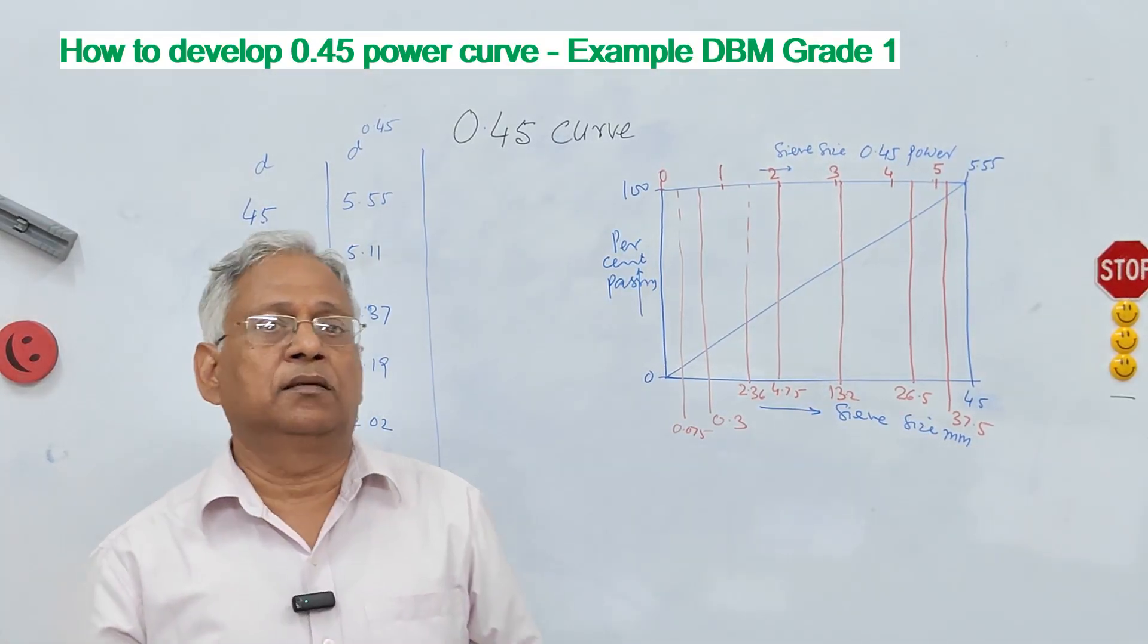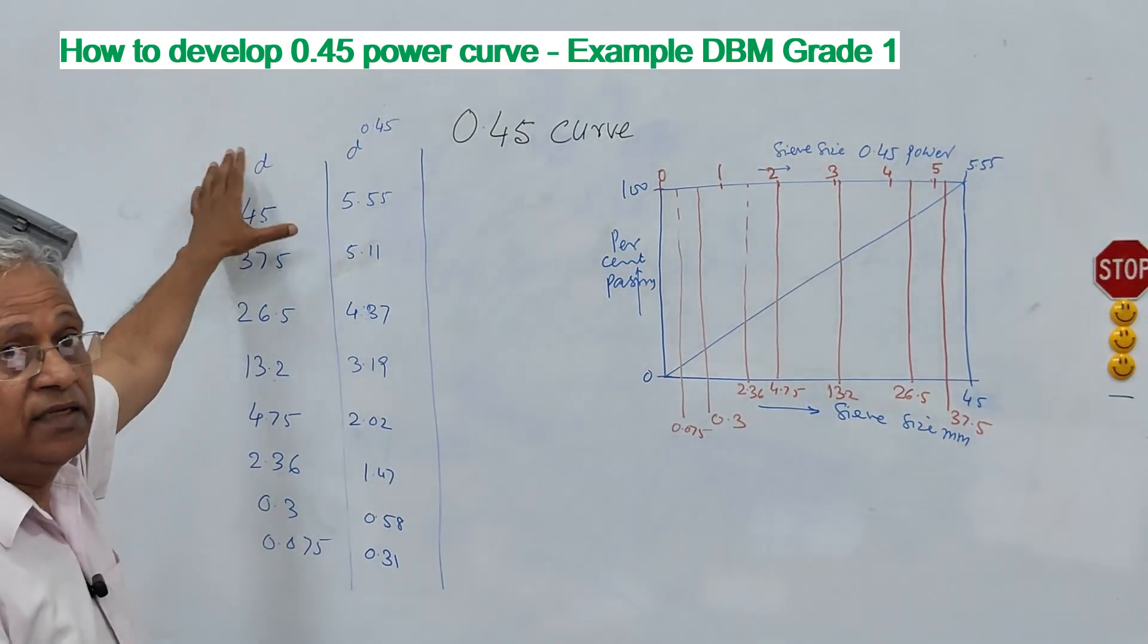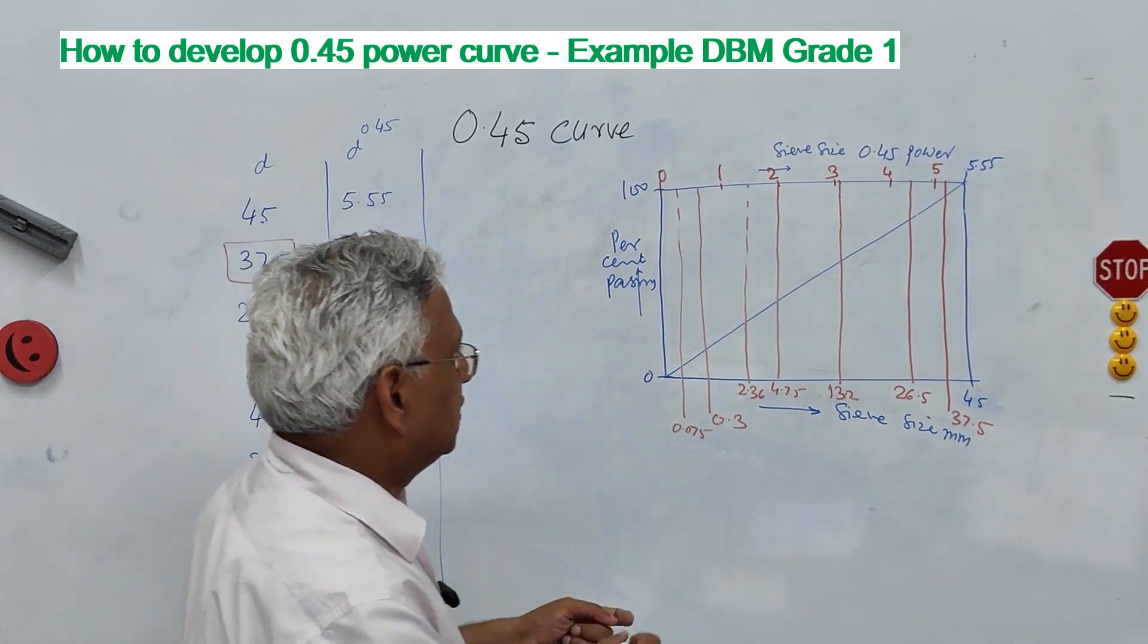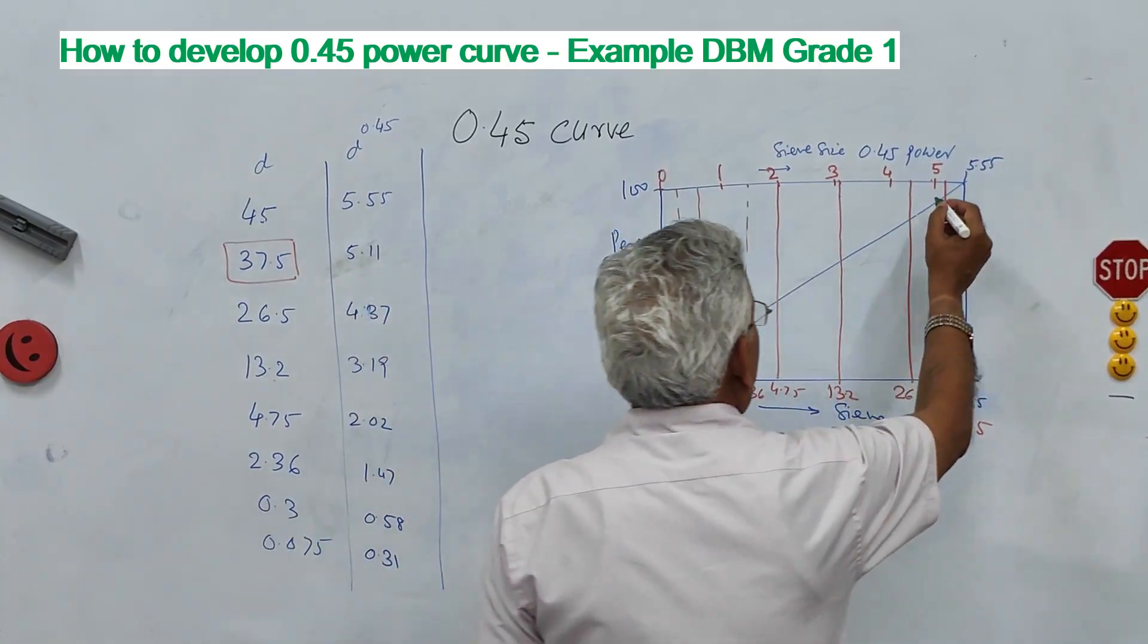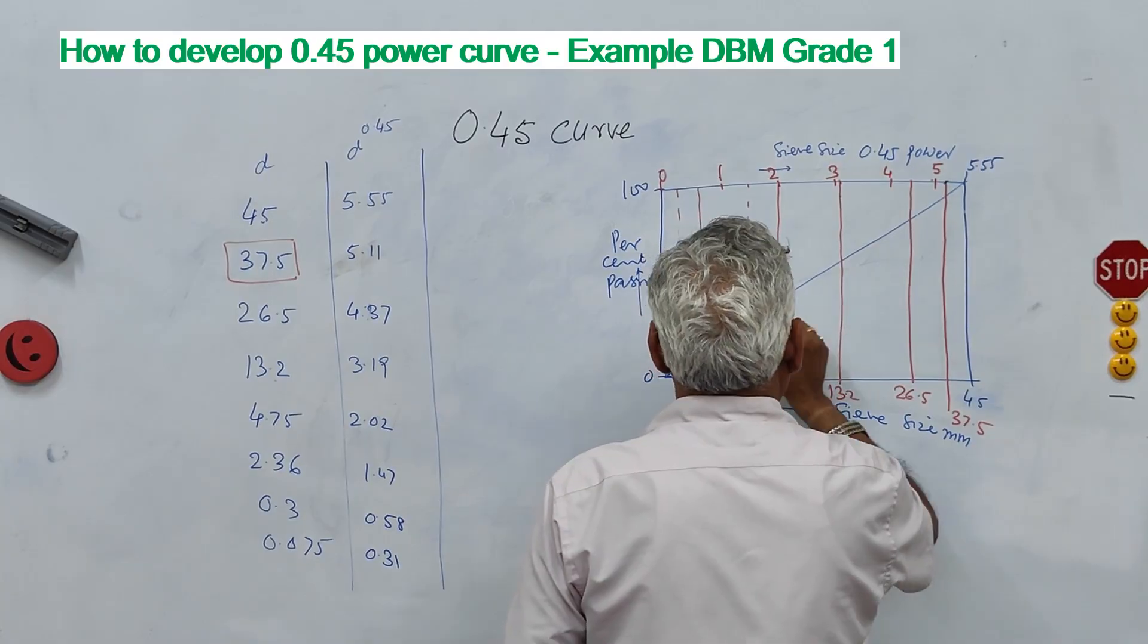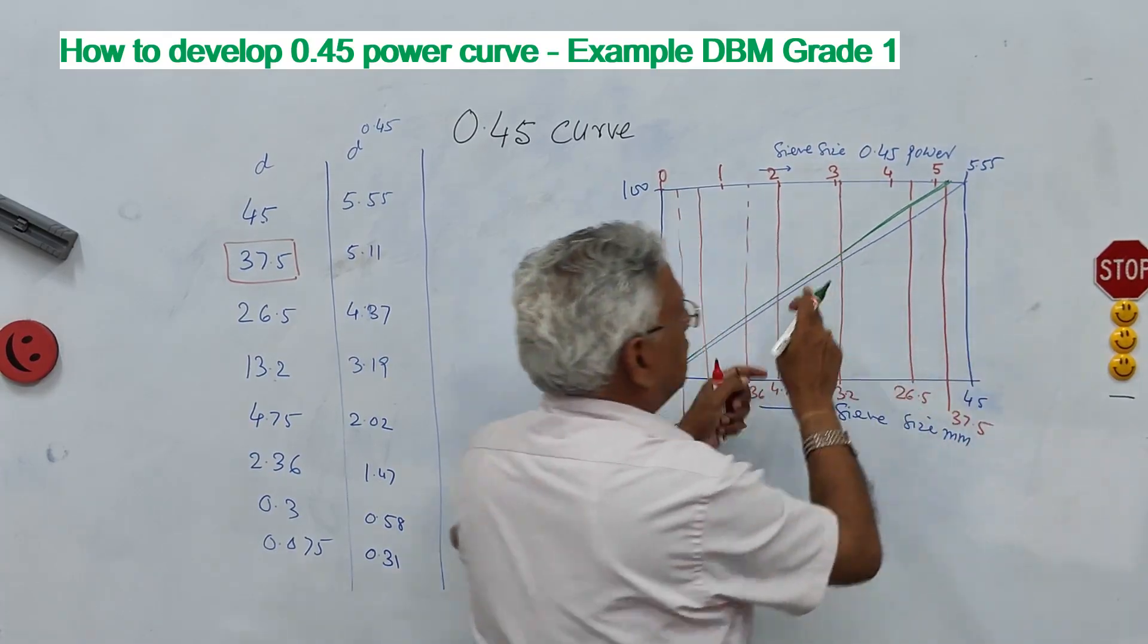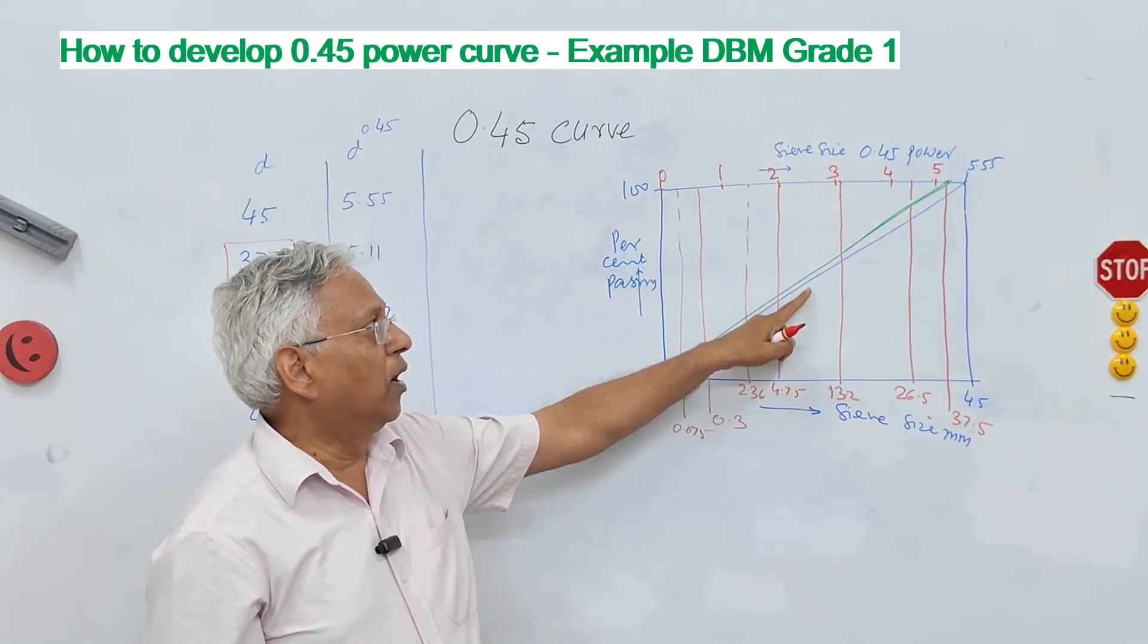Now suppose you take another mix let us say other than DBM1, you take DBM2. Now DBM2 starts from here 37.5 so you simply join this line here from the origin to this point, you get another chart here. Now this corresponds to DBM2, this is DBM1.